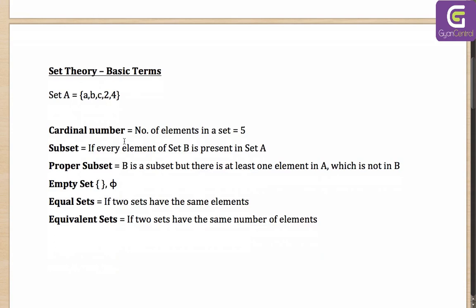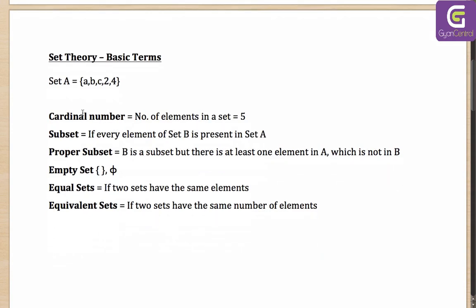A particular set is defined as a collection of elements which follows certain properties. The cardinal number of a set is the number of elements in that set. So for a set with elements a, b, c, 2, 4 — the cardinal number is 5.